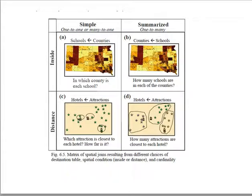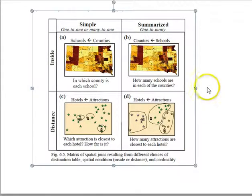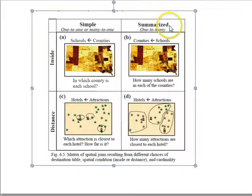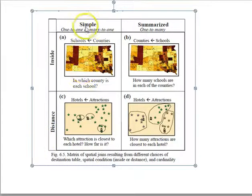The textbook has a useful chart worth noting for exams. It shows the two basic types of joins — inside and distance — versus simple and summarized, with cardinality mapped out. For a simple distance join, you get how far the closest hotel is, ignoring all other hotels. For a summarized join, you switch to asking how many attractions are nearer to this hotel than any other hotel.